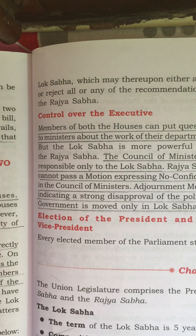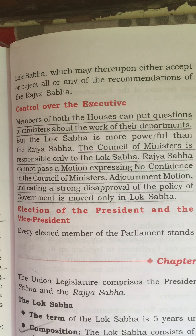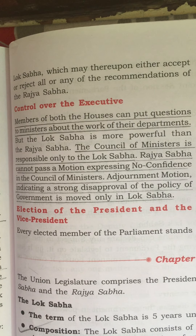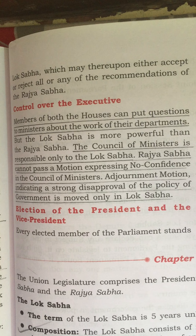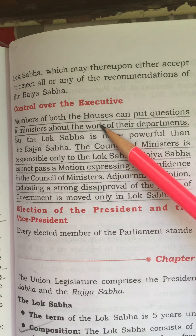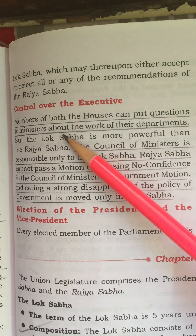Rajya Sabha must within 14 days return the bill to the Lok Sabha, which may thereupon either accept or reject any of the recommendations of the Rajya Sabha. So these are the differences over legislative matters: first, the ordinary bill, and second, the money bill.